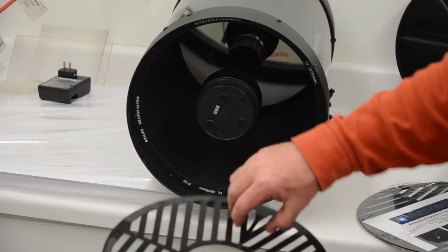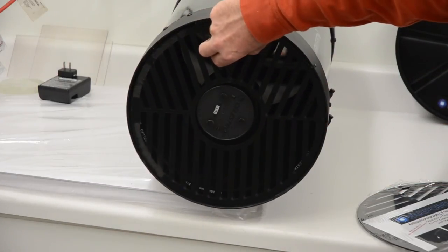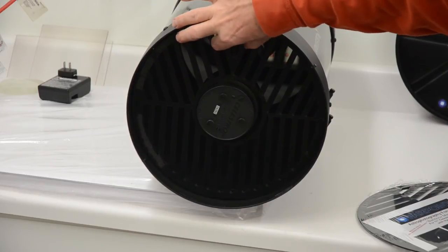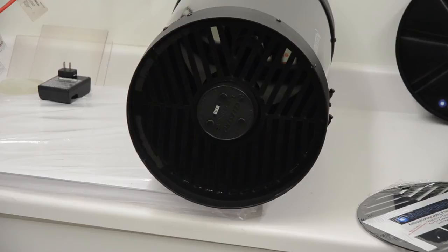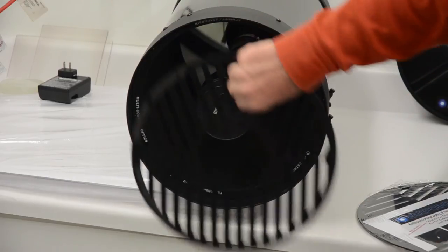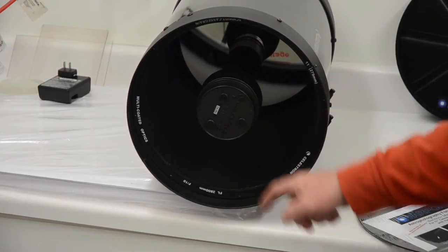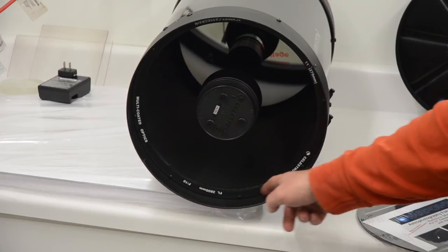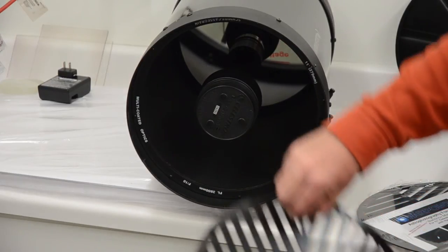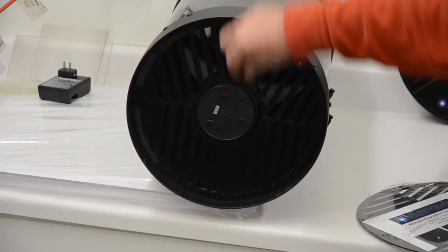To put it on, all you do is orient it the way you want, slide it right over the secondary housing. It just goes in right like that. Now you might worry about your corrector plate, but don't. Because if you look carefully, you'll see that it rests against the secondary mirror housing there, and it rests against the corrector rim right there. So there's no problem with it touching your corrector plate.